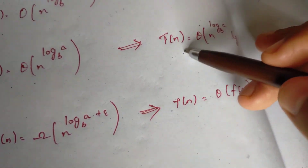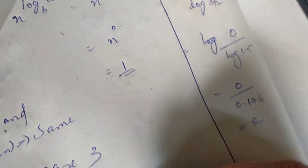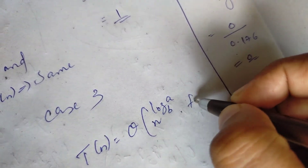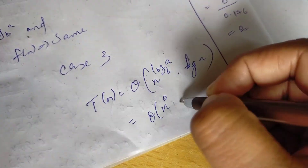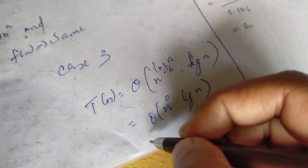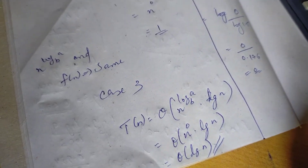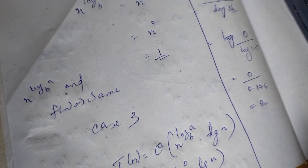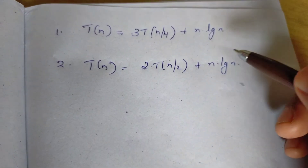For case 2, t of n equals theta of n^(log a base b) times log n. That is theta of n^(log a base b) times a logarithmic factor — that is theta of n raised to 0 times log n. Since n raised to 0 is 1, the answer is theta of log n. The next two questions are homework.